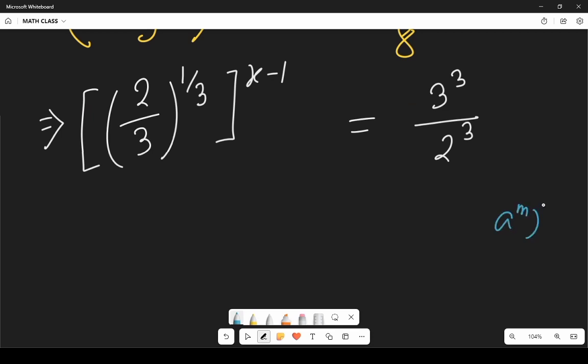And we know that a to the power m all to the power n can be written as a to the power m times n.